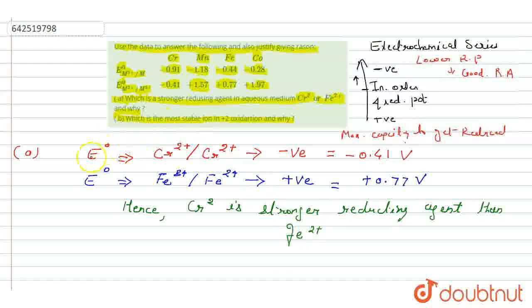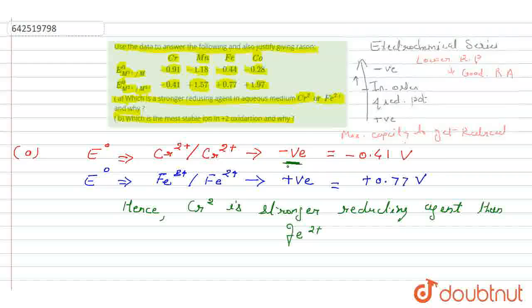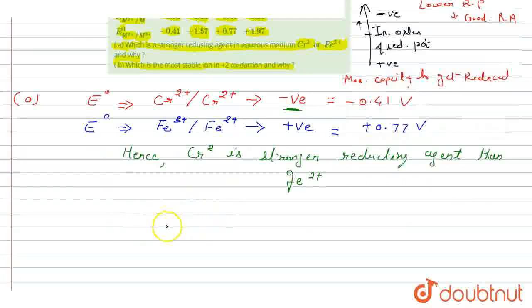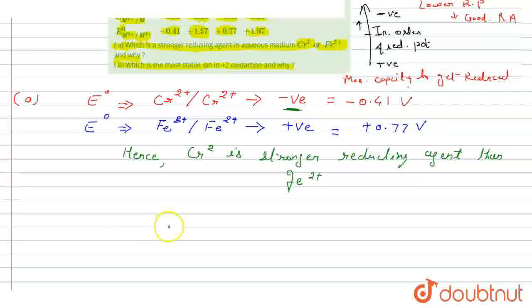Since Cr²⁺ has a negative value, this shows that it has a lower reduction potential. As it has lower reduction potential, it acts as a good reducing agent. Iron has a positive value, so it has higher oxidizing ability. From this, we can say that chromium is a stronger reducing agent than Fe²⁺.